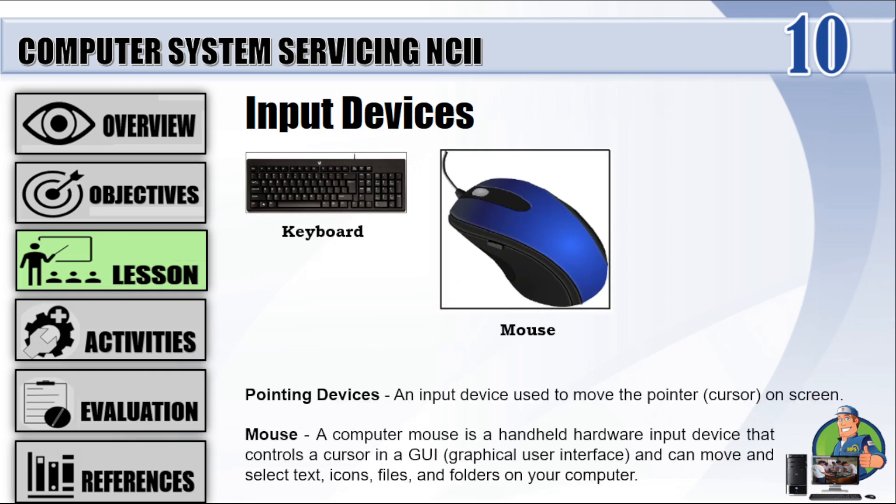Pointing Devices: An input device used to move the pointer or cursor on screen. Mouse: A computer mouse is a handheld hardware input device that controls a cursor in a GUI (graphical user interface), and can move and select text, icons, files, and folders on your computer.